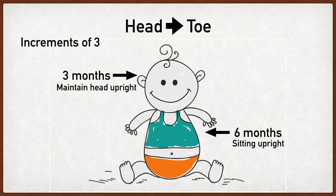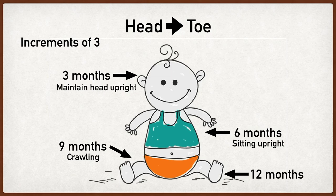Continuing to work our way down in increments of three, we're now at nine months. This points to the knees, and this will help you remember that this is when crawling starts to develop. As we continue to work our way down, we point to the feet now, and this is 12 months, to help you remember that this is when we start to walk.